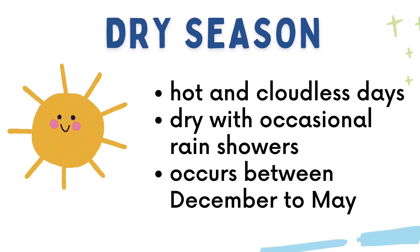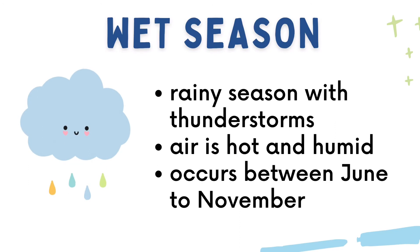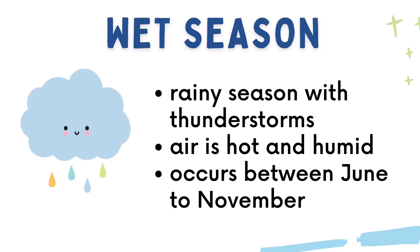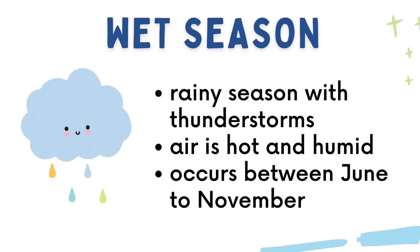The dry season is characterized by hot and cloudless days, dry with occasional rain showers, and it occurs between December to May. In contrast, the wet season is characterized by rainy weather with thunderstorms, air is hot and humid, and it occurs between June to November.